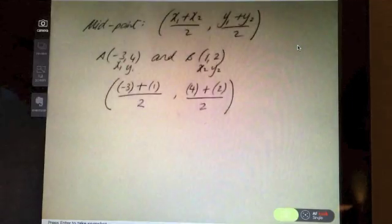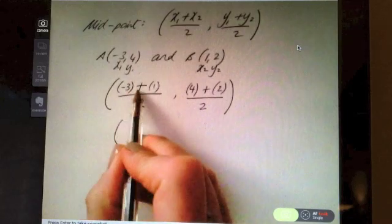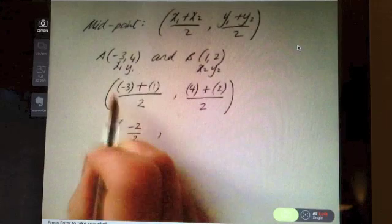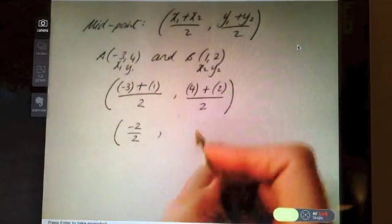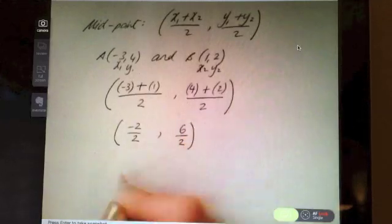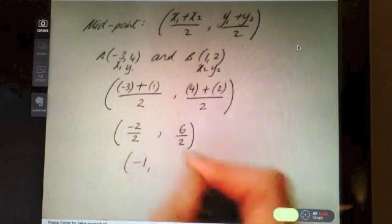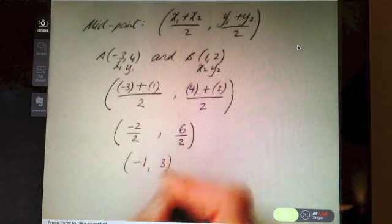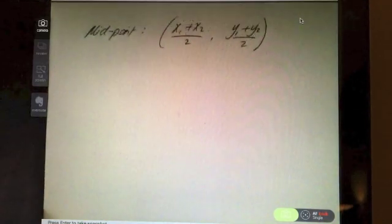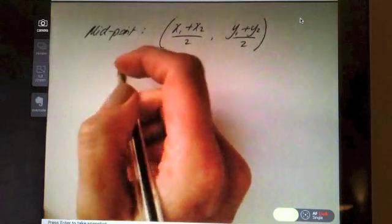Okay, open your bracket, do the calculation on top: -3 plus 1, which is -2. Watch your negative numbers here, be careful. Double check anything you need on the calculator if you have to. And 4 plus 2 is 6, divide by 2. And so -2 divide by 2 is -1, and 6 divide by 2 is 3. So (-1,3) is the midpoint.